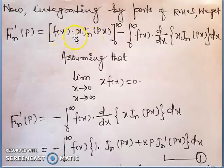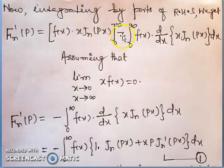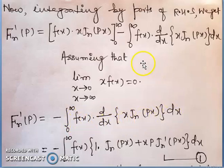fn'(p) on the left-hand side as it is; on the right-hand side we apply integration by parts: f(x) * x * jn(px) evaluated from 0 to infinity, minus the integral from 0 to infinity of f(x) * d/dx[x * jn(px)] dx. Assuming the limit as x→0 or x→∞ of x*f(x) equals 0, this boundary term vanishes. So fn'(p) = -∫₀^∞ f(x) * d/dx[x * jn(px)] dx.